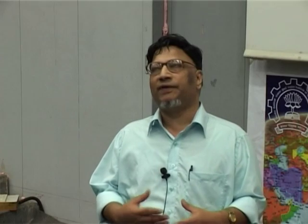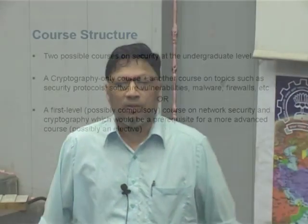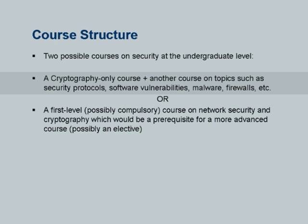Over the years, as this course evolved, there were different ways in which courses can be constructed. There are at least two possible ways. One is a cryptography-only course — cryptography has become so important and interesting that it is possible to have a cryptography-only course, followed by another course dealing with other aspects of security such as cryptographic protocols, software vulnerabilities, malware, and firewalls. Alternatively, we could have two courses: a basic course and a follow-up course. This is what we have experimented with and it has been fairly successful at IIT Bombay.